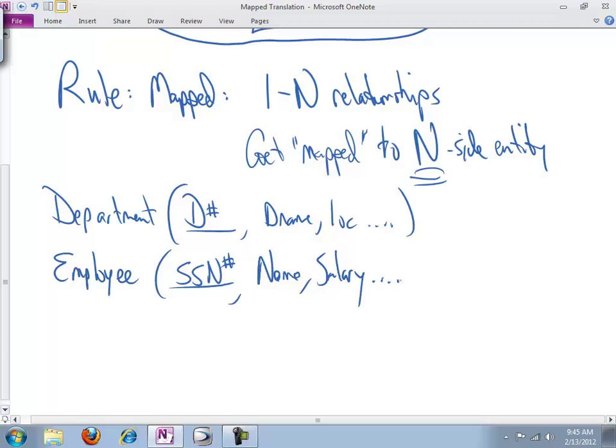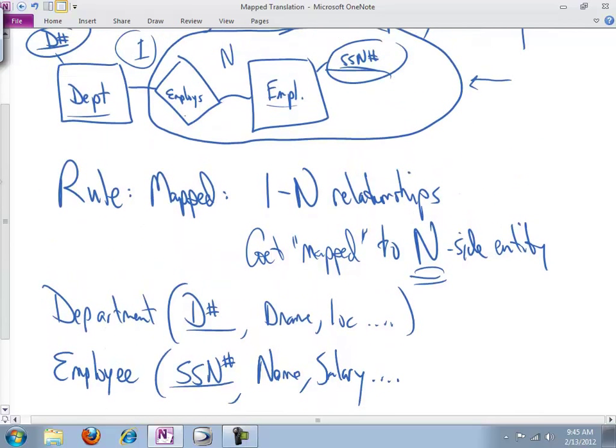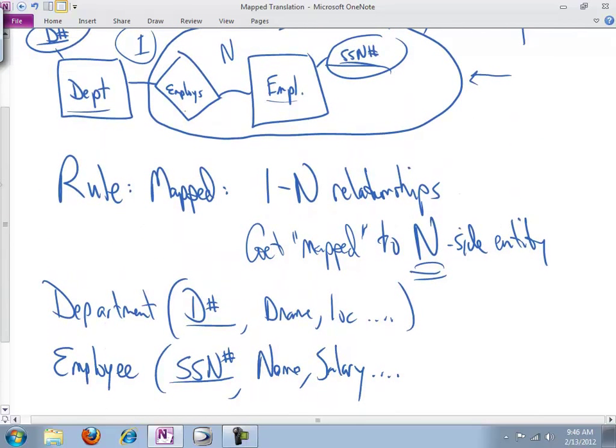But we need one other thing to provide that link, the foreign key. And the foreign key is what provides the linkage. What do you suppose the foreign key is going to be? We've got all this information native to employee, social security number, name, salary. But we're including the employee relationship, which provides a link to department. So what's the foreign key?